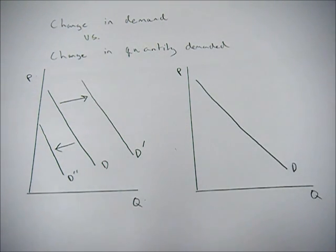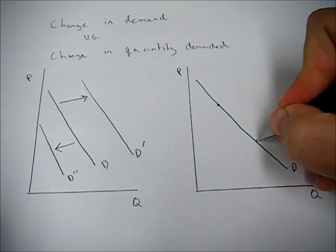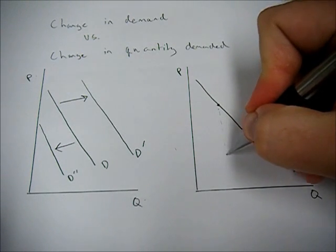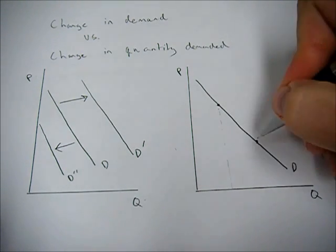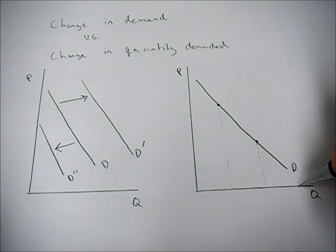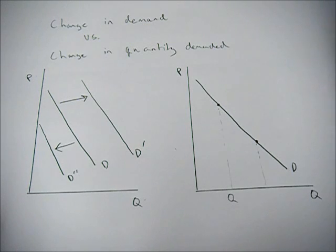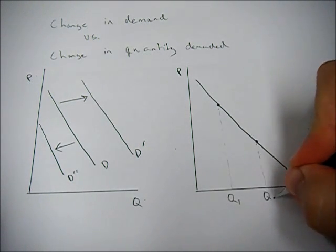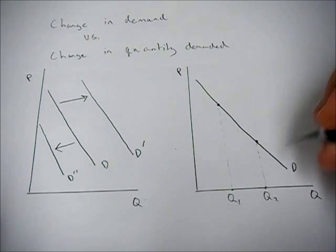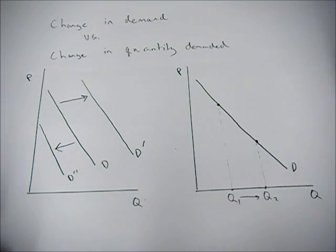When we look at a change in quantity demanded, we have our demand curve, but we're looking at specific points on that demand curve. So maybe this point here, and this point here, they intersect that x-axis at different levels of Q, or quantity.